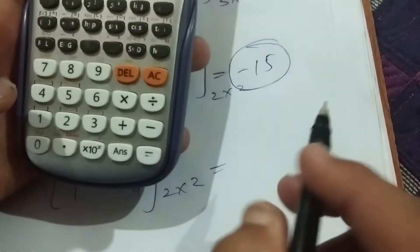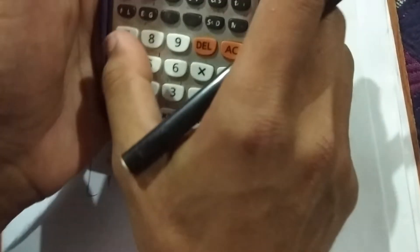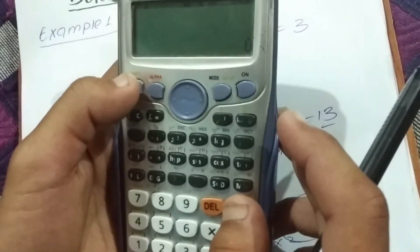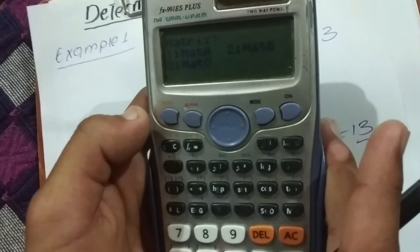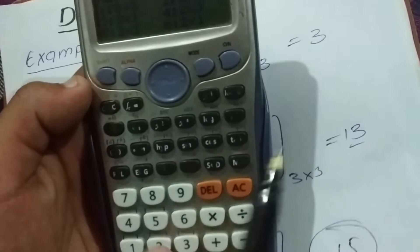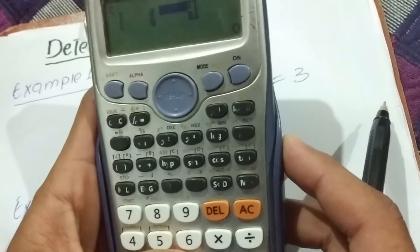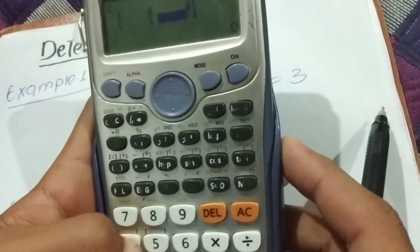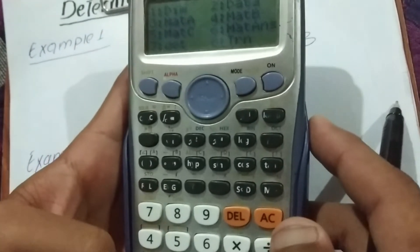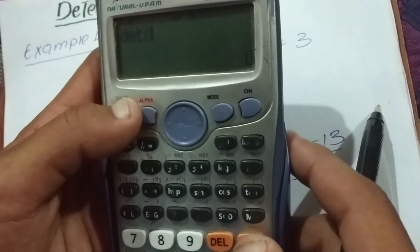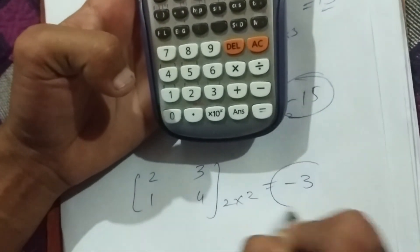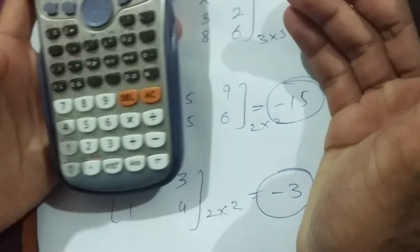Now we are going to solve this example, two by two example. Press shift button, four button, then determinant. Oh sorry, first save this. Shift, 4, 1 for dim, and this matrix 2, 2. Then enter 2, 3, 1 and 4. Now this matrix is saved in mat C. Press AC button. Press shift, 4, determinant. For determinant press 7, then again shift, 4, for determinant on the calculator.